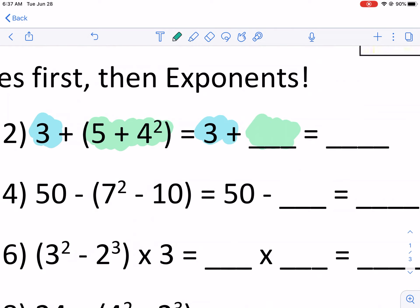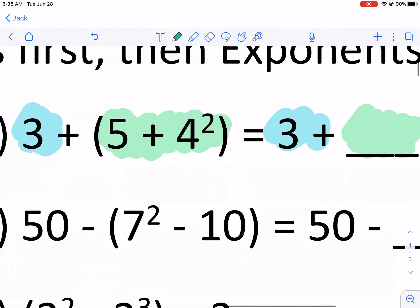Now onto the parentheses. Again, we're going to follow order of operations again. Are there parentheses, exponents, multiplication, division, addition, subtraction? I don't think I can say that any faster. So we have 5 + 4². We know 4² is 16. We're going to start here because that's exponents.